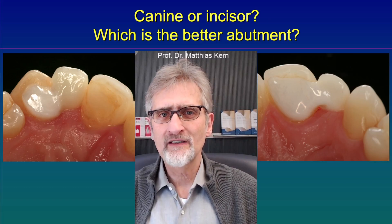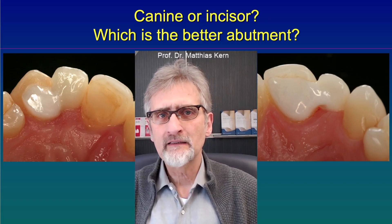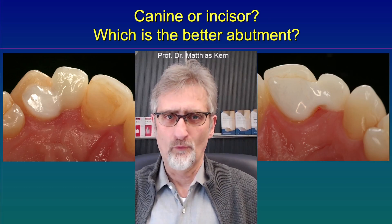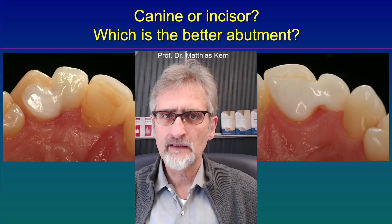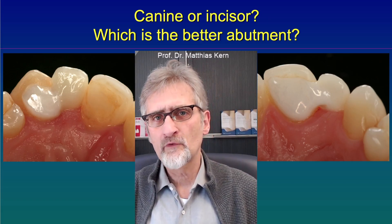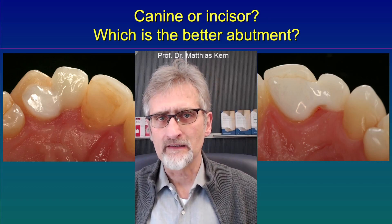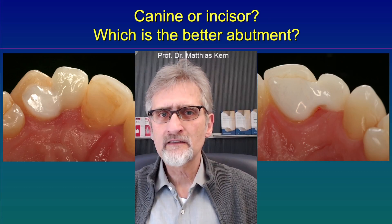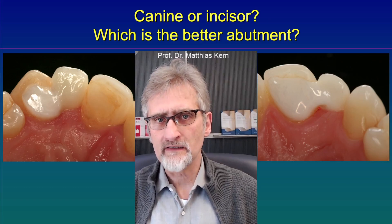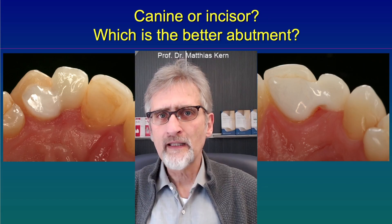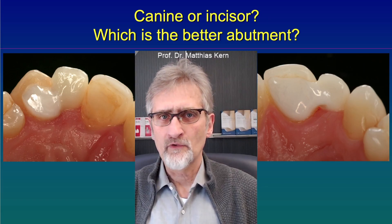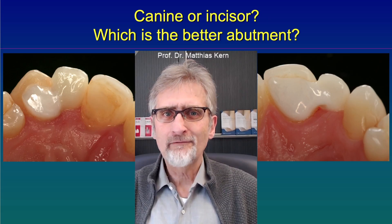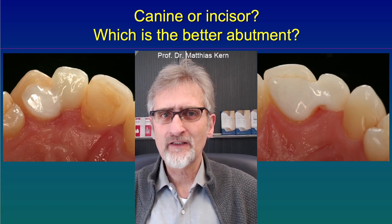Now the question is, which is a better abutment tooth? Should we use a canine as a standard abutment or should we use a central incisor? There are distinct advantages of using the central incisor. For that reason we are using the central incisor in about 95% of the cases.